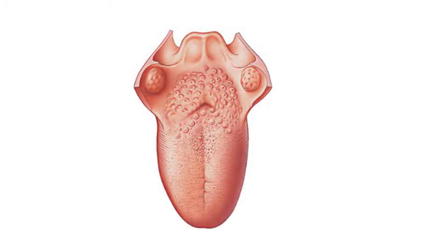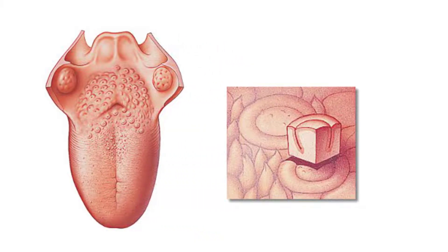Do you ever wonder how you can taste the foods you eat? It all starts with taste receptors in your muscular tongue. Taste receptor neurons are found in your taste buds, but you are not looking at the taste buds. The raised bumps on the surface of the tongue that you see are specialized epithelial structures called papillae that contain the taste buds.